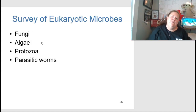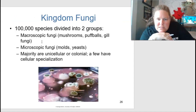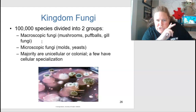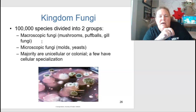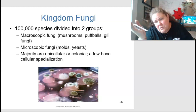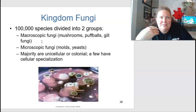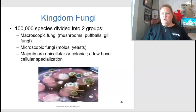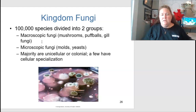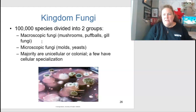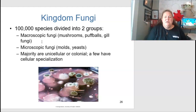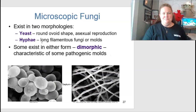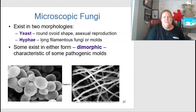In the survey of eukaryotic microbes, we'll focus on fungi, algae, protozoans, and parasitic worms. In the kingdom Fungi there are 100,000 species divided into macroscopic fungi — like mushrooms, puffballs, and gill fungi, visible to the naked eye — and microscopic fungi, like molds and yeasts, which we examined in lab. The majority of fungi are unicellular or colonial, with few having cellular specialization.